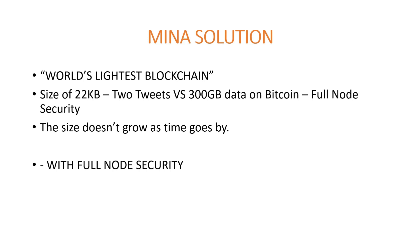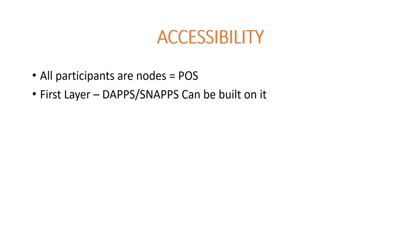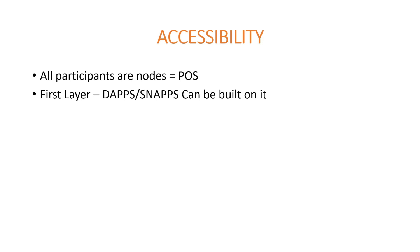Mina's solution is touting the world's lightest blockchain — a size of 22 kilobytes, which is the size of two tweets — versus Bitcoin where someone has to download 300 gigabytes of data on a four-thousand-dollar computer. Over time, this size doesn't grow because of the use of recursive zk-SNARKs, and all participants are nodes. It's proof-of-stake and a first layer, meaning dApps and SNAPs can be built on it, and it also serves as an oracle.